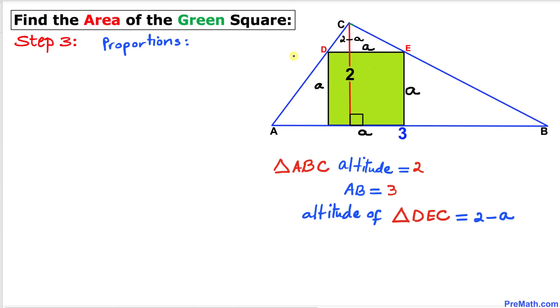Since these two triangles are similar, we can have these proportions. I can write 3 over A equals 2 divided by 2 minus A.